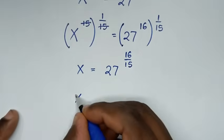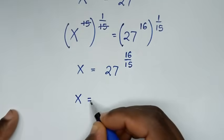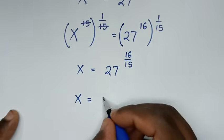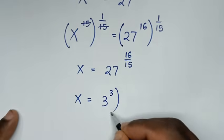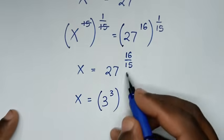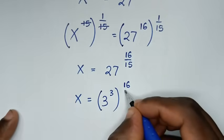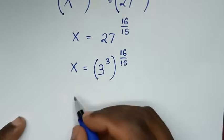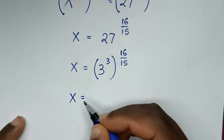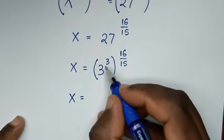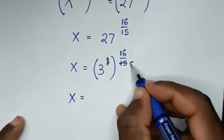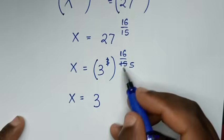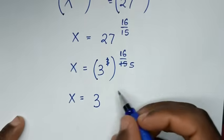Then it will be x is equal to 27, and 27 is the same as 3 to the power of 3, then bracket to the power of 16 over 15. So it will be x is equal to — to simplify — here by 1, here by 5. So it will be 3 to the power of 16 over 5.